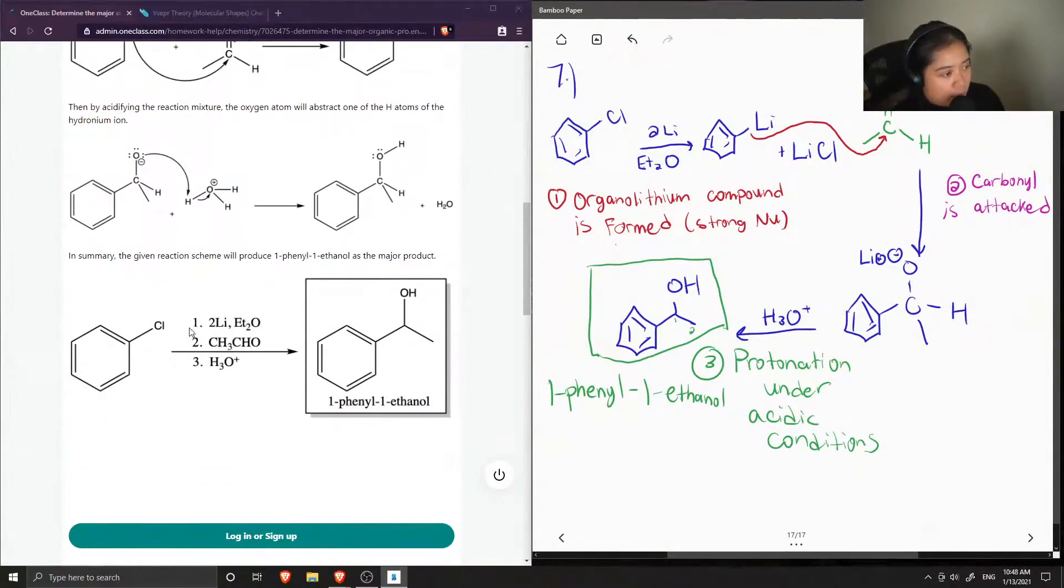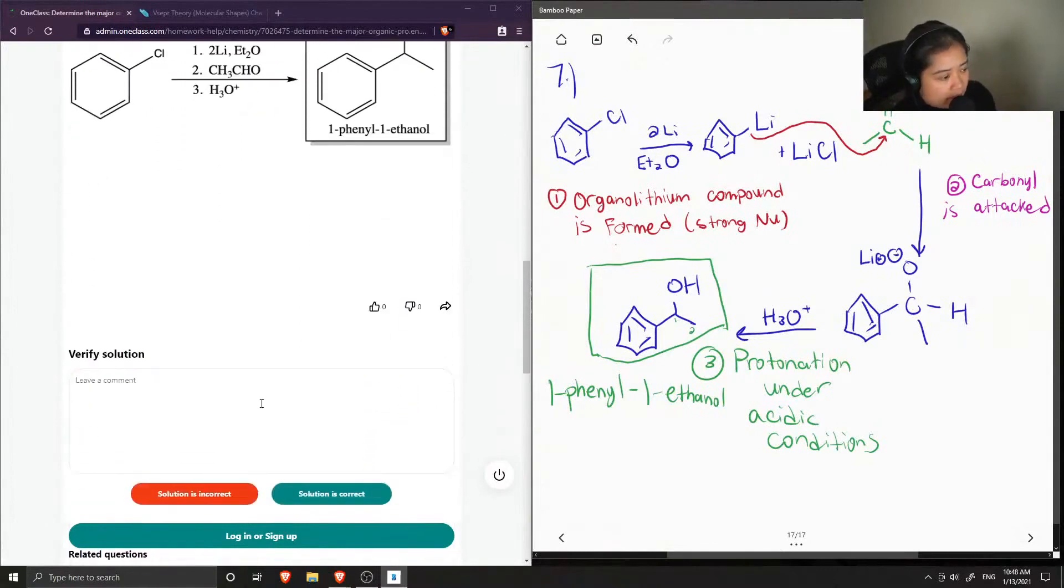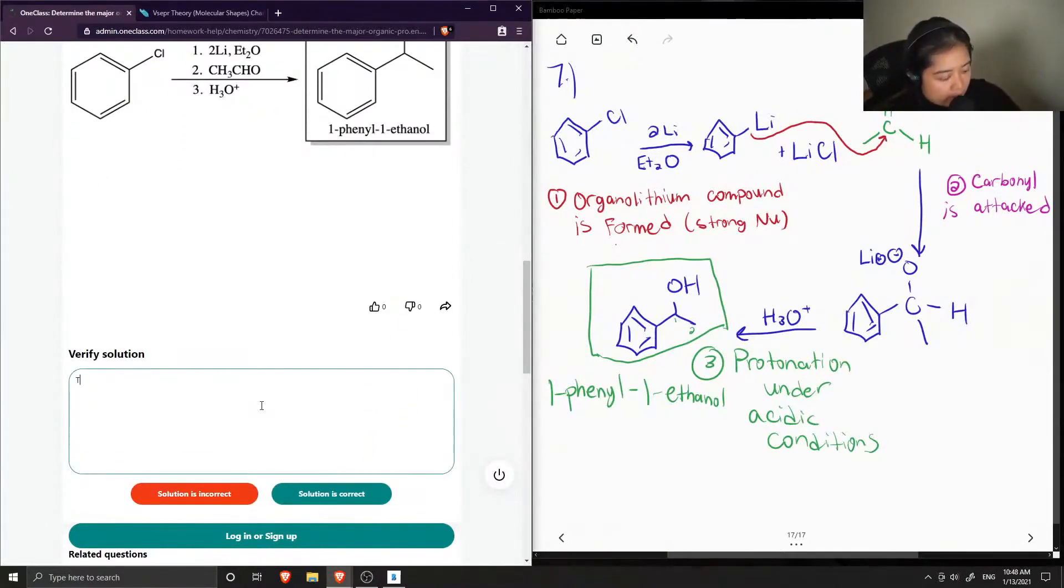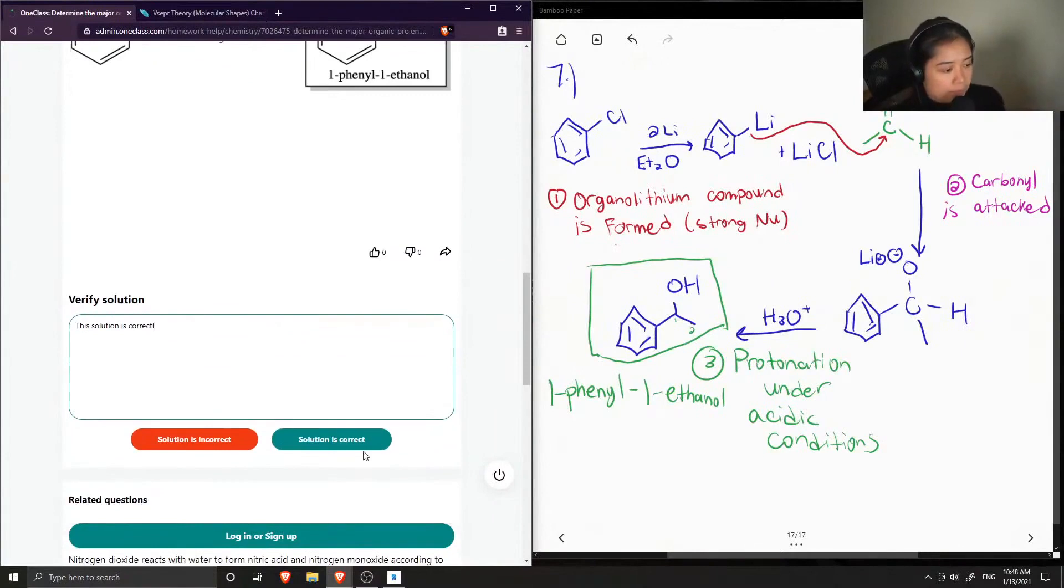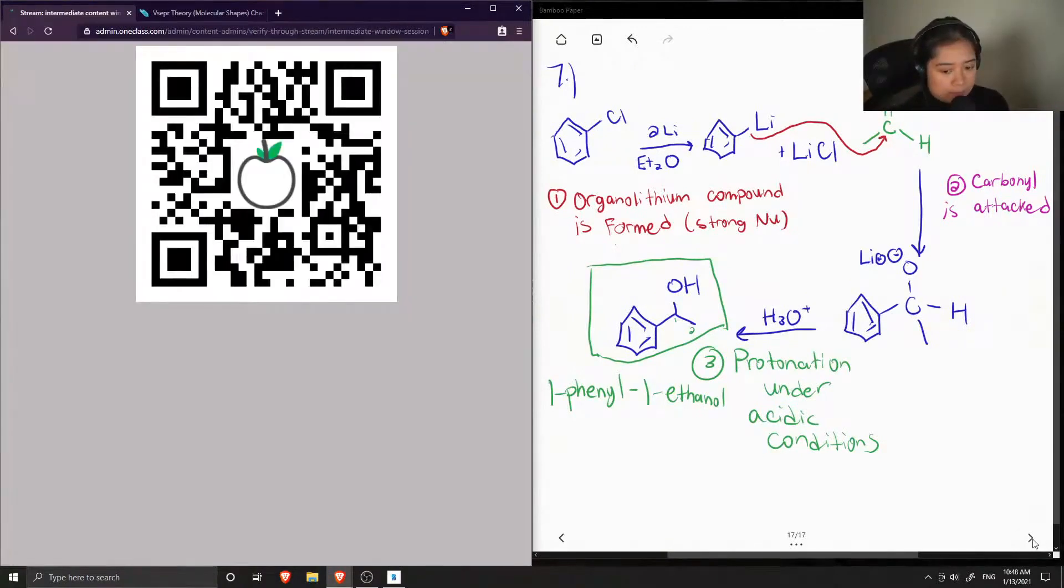In summary, the given reaction scheme will produce one-phenyl-one-ethanol as the major product. Okay, so this solution is correct. That is correct. To be continued.